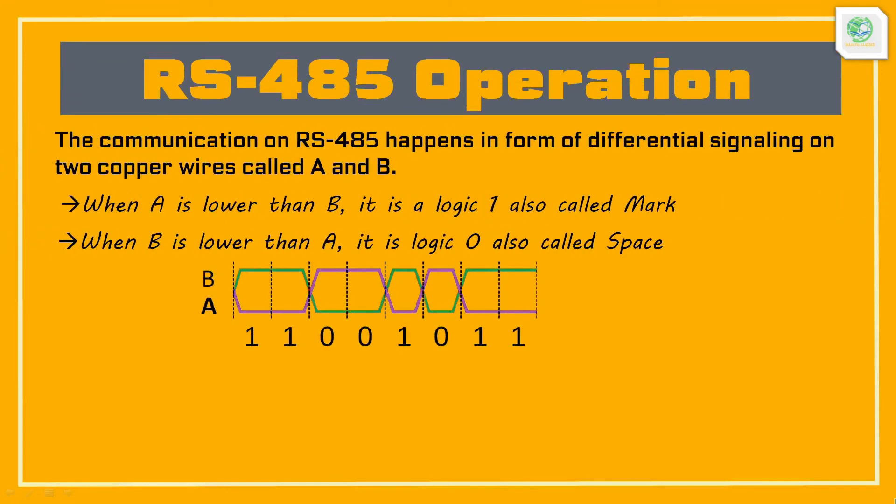Now let's understand how RS-485 works. The communication on RS-485 happens in the form of differential signaling on two copper wires called A and B. An additional wire may be used for common ground across all the connected devices. For now, we will concentrate only on lines A and B.